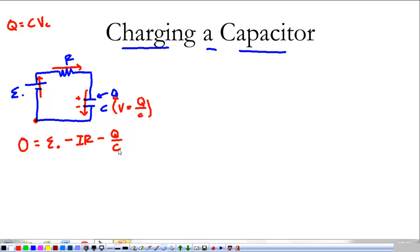Now, looking at this right now, it may seem like an equation we can't do much with. We only have I's and Q's together. But, we have a relationship between Q and I. So, if I is DQ over DT, this thing changes into the EMF of my battery minus R times DQ over DT minus Q over C.